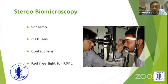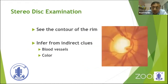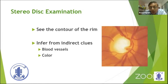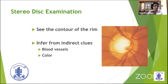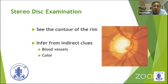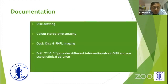For slit-lamp disc examination, use 60D, 70D, or 90D lenses or a contact lens. Don't use indirect ophthalmoscope or direct ophthalmoscope for diagnosis of optic disc changes. When you do a stereo examination, the contour of rim examination is very important. You get indirect clues from the blurred vessels and color. When you do a stereo examination, these clues give you an idea about the cup and rim — the way the vessels are bending and coming forward. You use that clue to differentiate cup from rim, not the color.